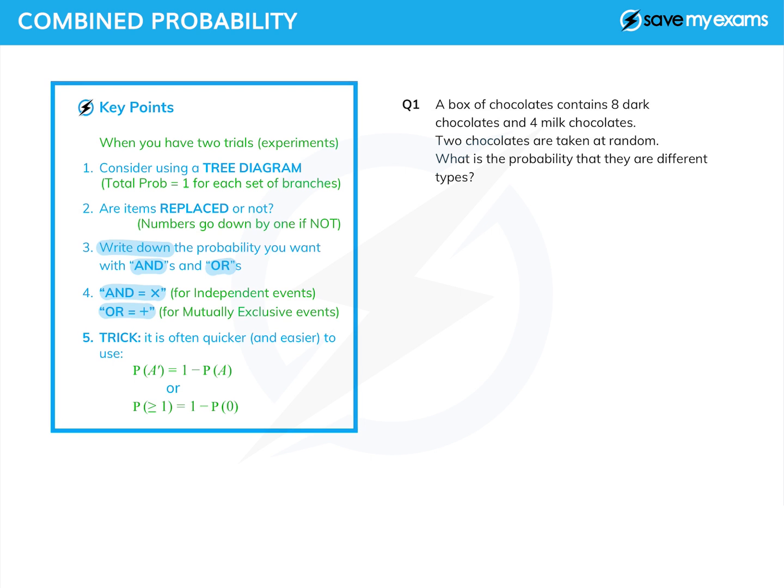Just pausing to note that the AND rule, AND is times, works for independent events. In other words, the first thing doesn't affect the second thing. And the OR rule works for mutually exclusive events, which means the two things can't happen at the same time, like a head and a tail on a coin.